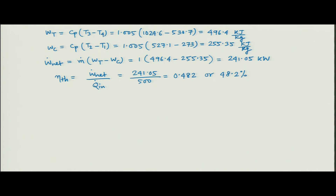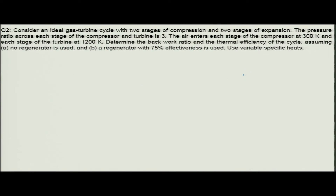In the next problem we look at an ideal gas turbine cycle with two stages of compression and two stages of expansion. The pressure ratio across each stage of the compressor and turbine is 3. Air enters each stage of the compressor at 300 Kelvin.